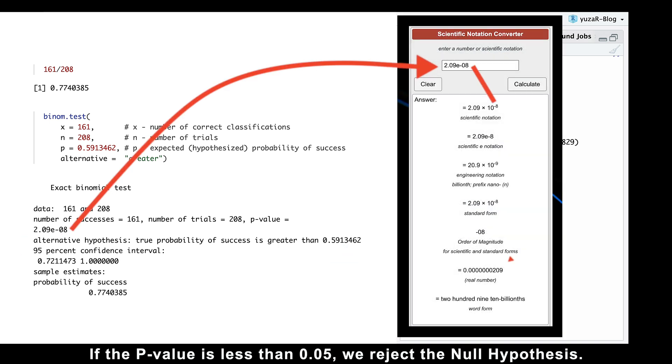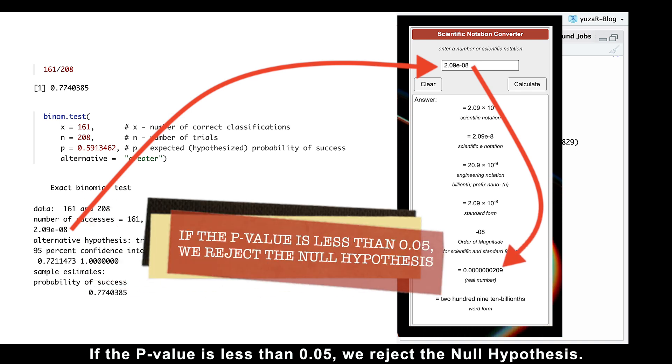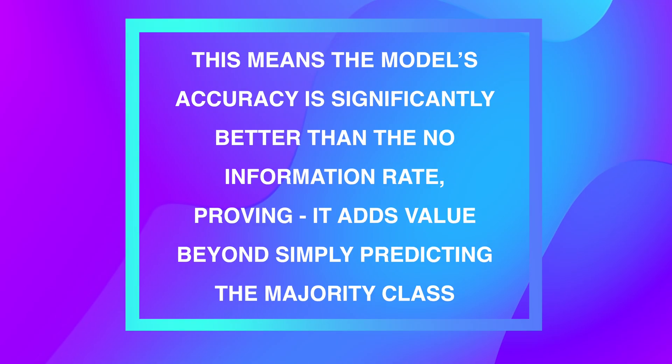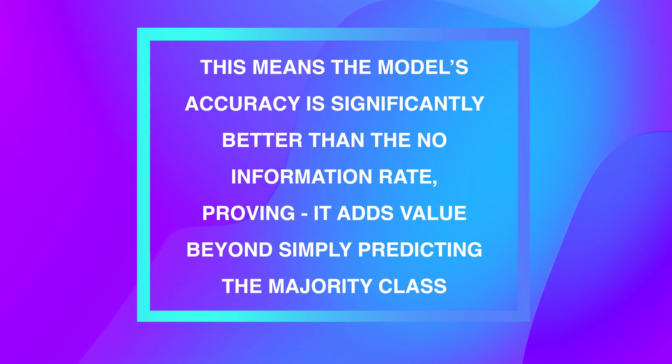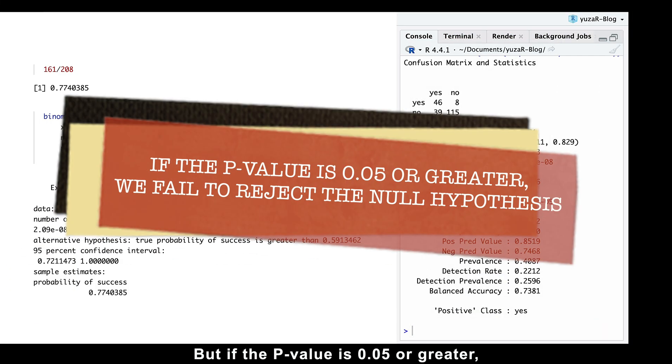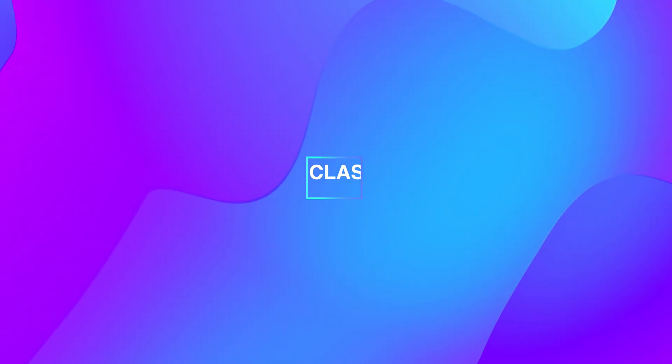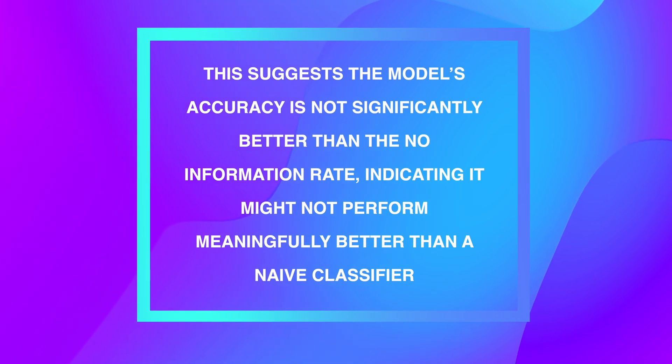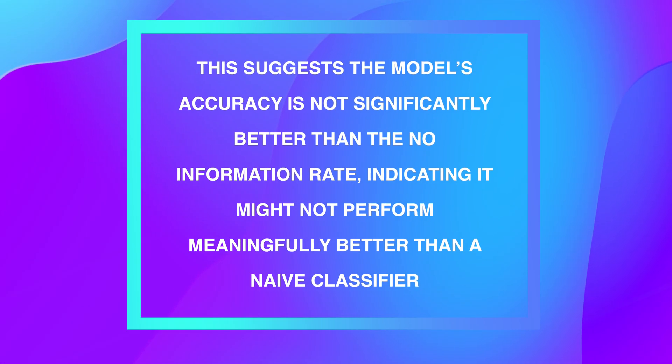If the p-value is less than 0.05, we reject the null hypothesis. This means the model's accuracy is significantly better than the no information rate, proving it adds value beyond simply predicting the majority class, like in our example. But if the p-value is 0.05 or greater, we fail to reject the null hypothesis. This suggests that the model's accuracy is not significantly better than the no information rate, indicating it might not perform meaningfully better than a naive classifier.